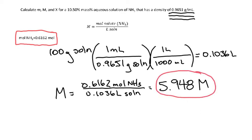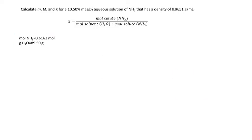We've solved for molality and molarity. Next up, we're solving for the mole fraction. The mole fraction is defined as moles of the solute — ammonia — divided by total moles: moles of the solvent (water) plus moles of the solute (ammonia). We already have moles of ammonia from the molality calculation, and we know we have 89.50 grams of water.